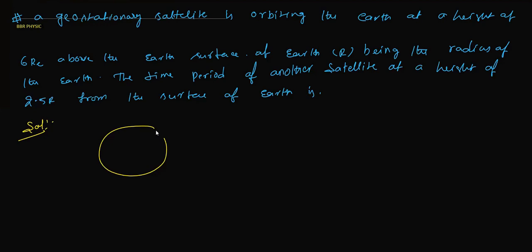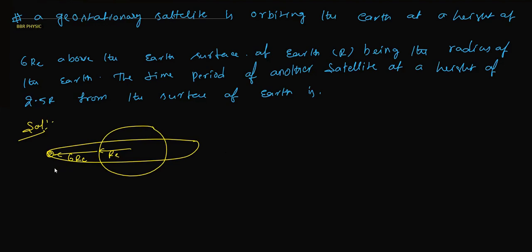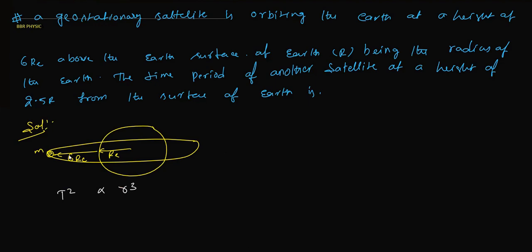Let's draw a diagram with Earth at center. The Earth radius is Re, and the geostationary satellite revolves at a height of 6 Re. So the total orbital radius is Re + 6Re = 7Re. Applying Kepler's third law, T² ∝ R³, we get: (24 hours)² = (7R)³. This is equation number 1.